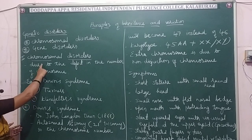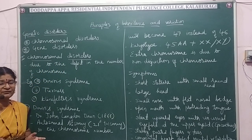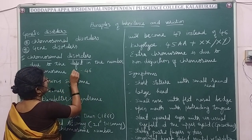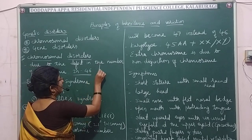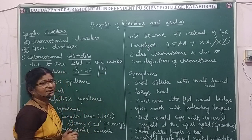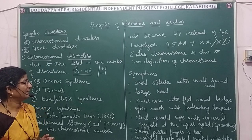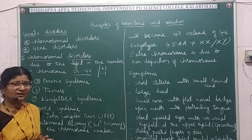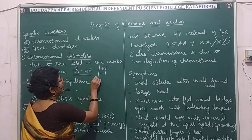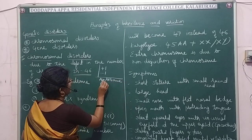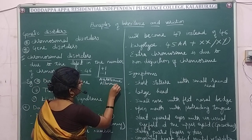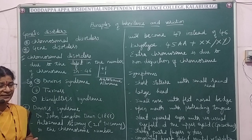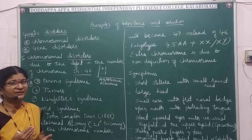In chromosomal disorders, the defect lies in the number of chromosomes. The normal chromosomal number is 46. The defect may be plus one or minus one. If plus one, it is trisomy; if minus one, it is monosomy. The defect may be with the autosome or the allosome — meaning either the somatic chromosomes or the sex chromosomes are affected.